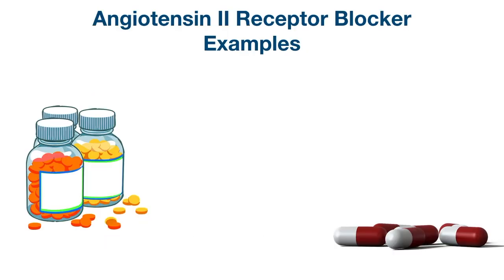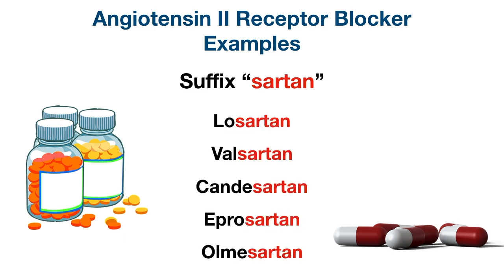Let's take a look at some example angiotensin 2 receptor blockers. The easy way to remember ARBs is that most of their drug names end in '-sartan.' Some examples include Losartan, Valsartan, Candesartan, Eprosartan, and Olmesartan.